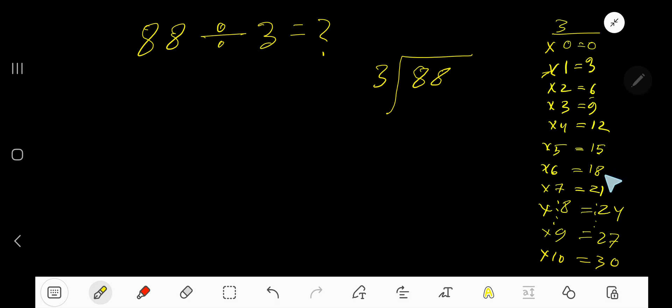3 goes into 8 how many times? 3 times 3 is 9 which is greater, so 2 times. 2 times 3 gives us 6. Subtract to get 2, then bring down the next digit.